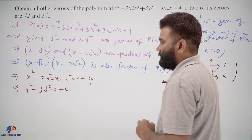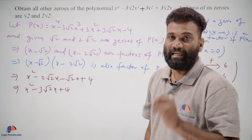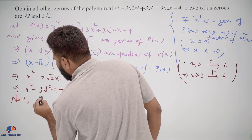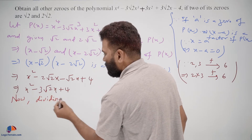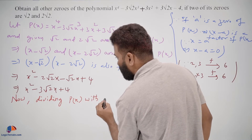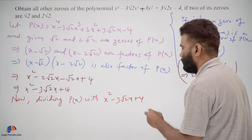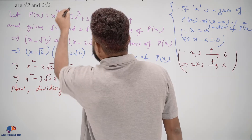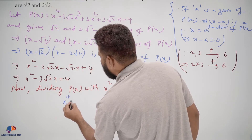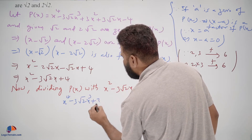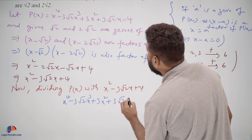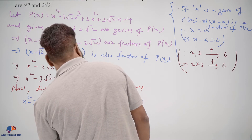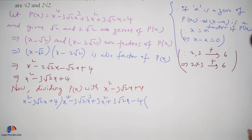Since (x squared minus 3 square root 2 x plus 4) is a factor of P(x), it divides P(x) exactly. So now we divide P(x) by (x squared minus 3 square root 2 x plus 4) to get the remaining factors. P(x) is x to the power of 4 minus 3 square root 2 x cubed plus 3 x squared plus 3 square root 2 x minus 4. We are dividing this by x squared minus 3 square root 2 x plus 4.